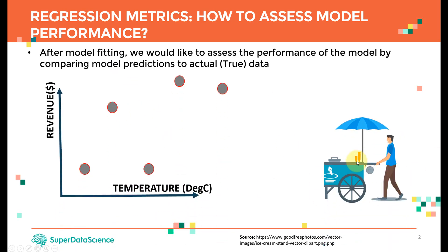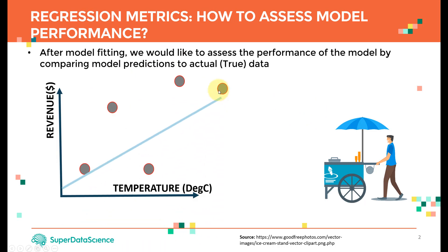Let's use our ice cream example. We want to develop a regression model that captures the relationship between temperature on the x-axis and revenue on the y-axis. As an ice cream cart owner, we collected data: at lower temperatures like 10°C, revenue is small; as temperature increases, people tend to like ice cream more, so revenue becomes higher. We collected this dataset and fit a linear regression model — a straight line that best fits our training data.